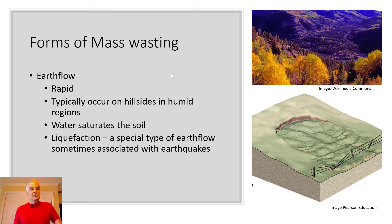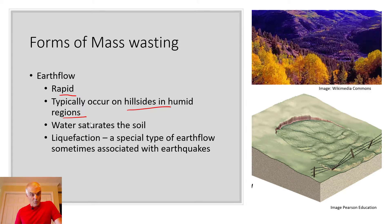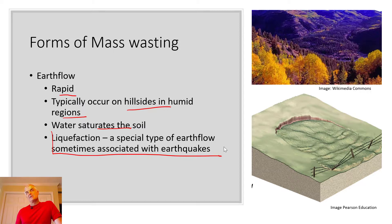Earth flow. Earth flows are interesting ones. They're rapid. They occur on hillsides in humid regions — you've got to get a lot of water. Water saturates the soil, and then you get something called liquefaction. It's a special type of earth flow that's sometimes associated with earthquakes, because it liquefies like earth. Then you get water mixed in and it's amazing. Let's watch a clip of this — it's really cool and sort of scary.